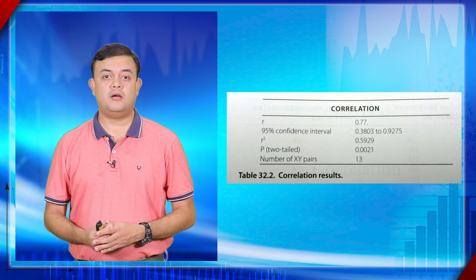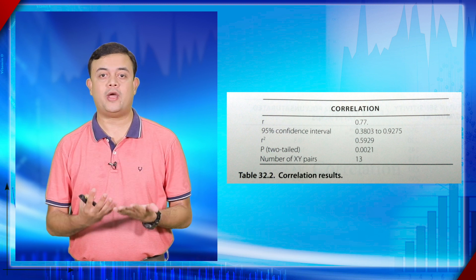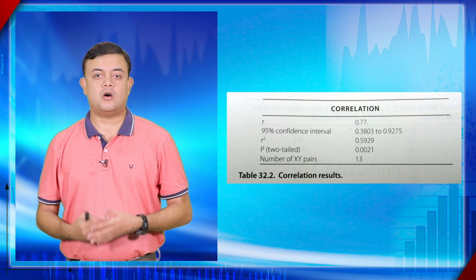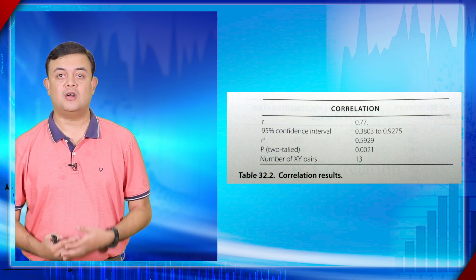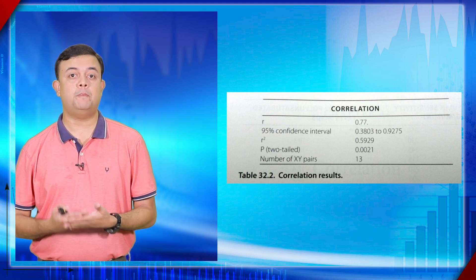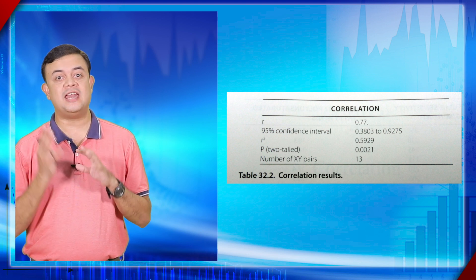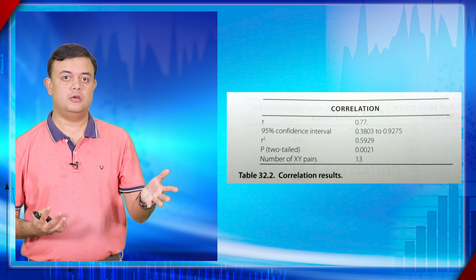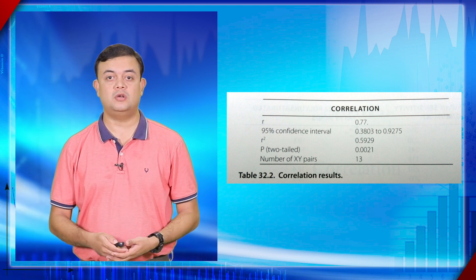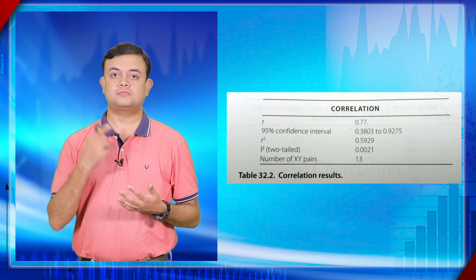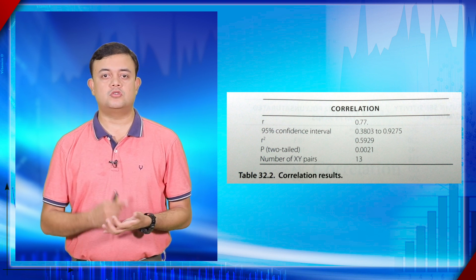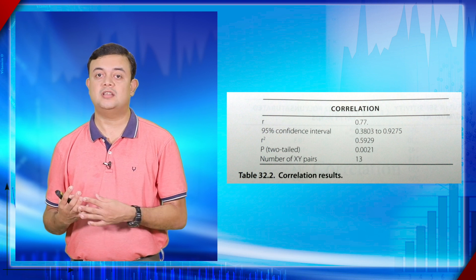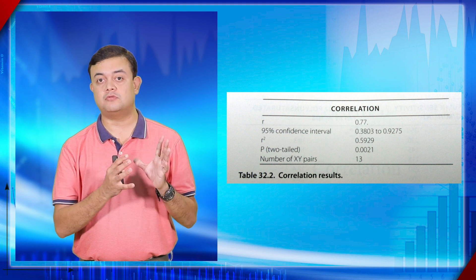Perhaps more important than r is r-squared — the coefficient of determination. r-squared is simply r², which in this case is 0.5929, meaning approximately 59.2% of the variation in x is associated with variation in y, and vice versa. Always examine the r-squared value. The p-value here is 0.0021, which is significant, but the r-squared value is the more important metric to consult.